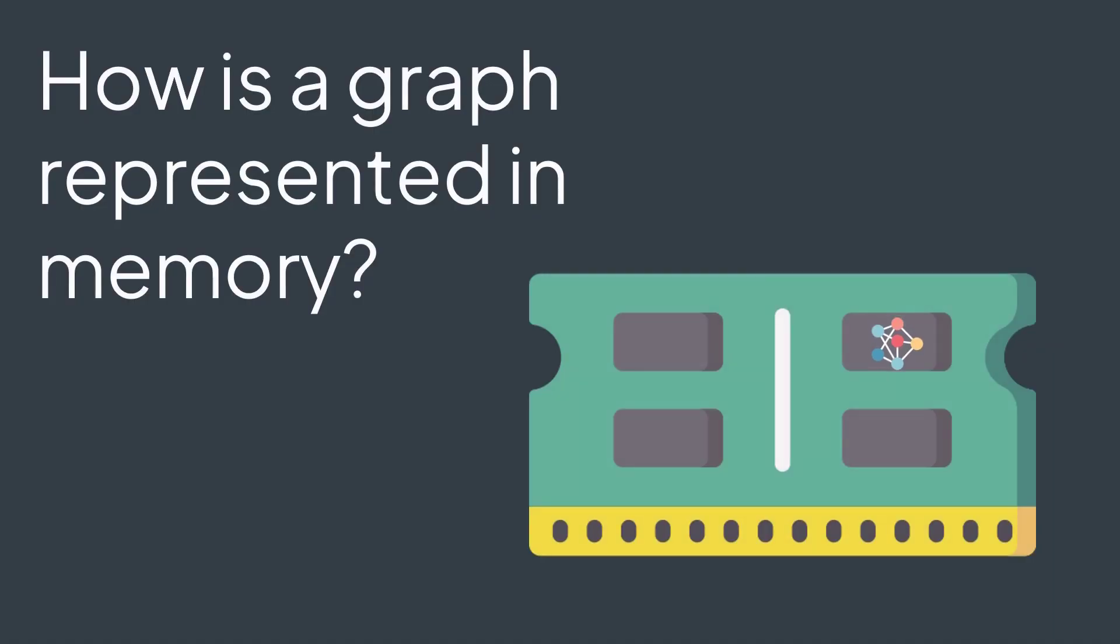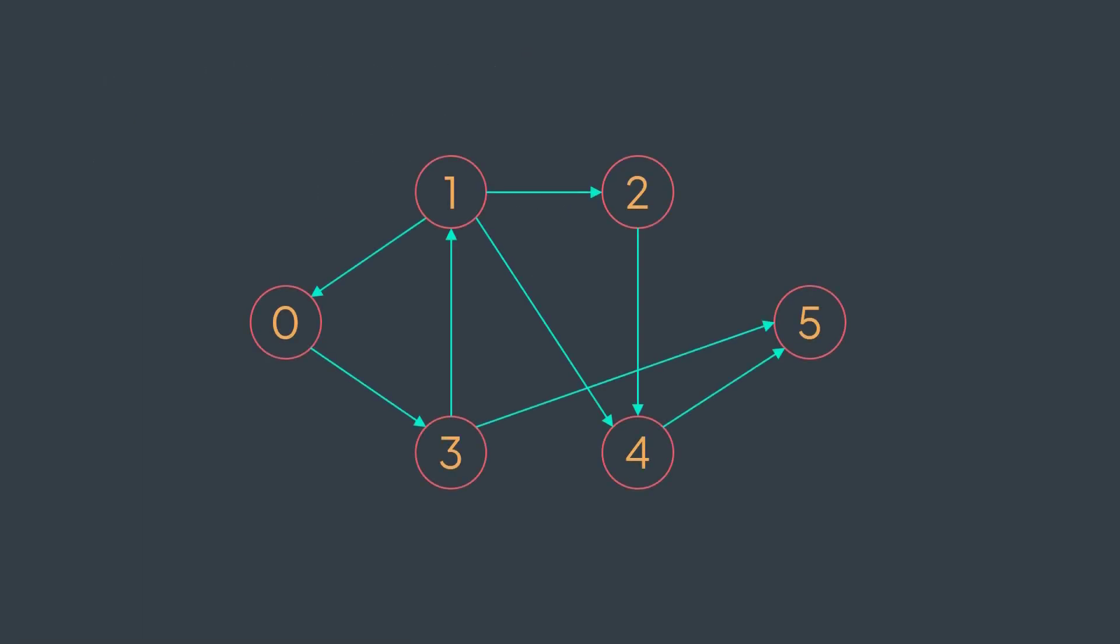First of all, before talking about representing a graph, we first should be able to represent a vertex and an edge. For vertices, a vertex should have a unique ID to be able to identify it among other vertices. Usually, at least for examples, a vertex is represented with an integer. Like in this graph, we have vertex zero, vertex one, etc.